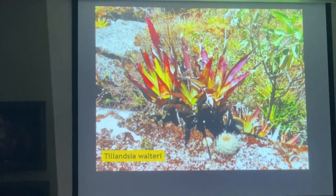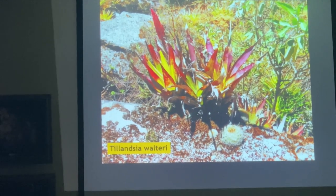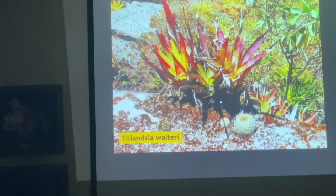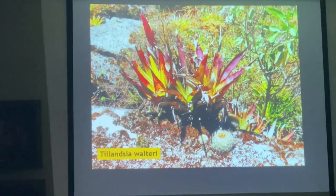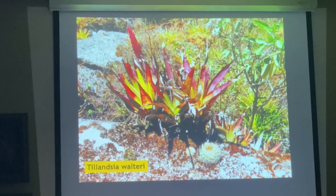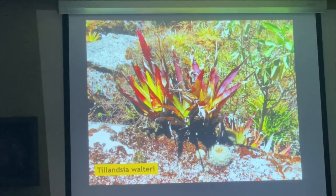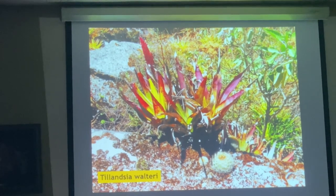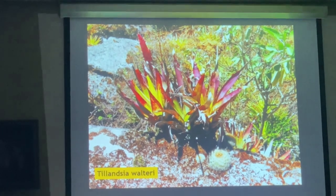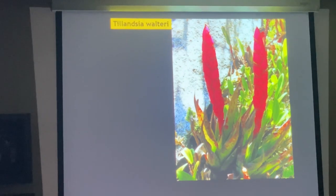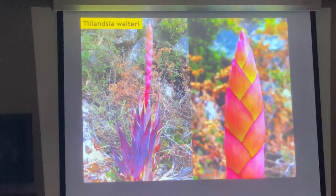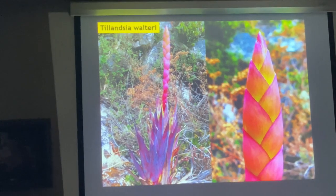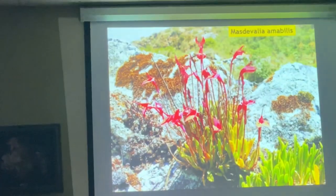This is Tillandsia valteri. Tillandsia valteri usually has yellow bracts. The first time I showed this to Pam Koide, she said 'no, no — Tillandsia valteri has the yellow thing.' Then I realized the yellow one is the most common, but in this area they are all red — and still the same species. The common form is the one with yellow.